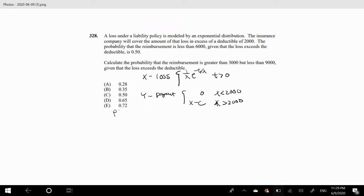They give you the probability the reimbursement is less than $6,000 given the loss is greater than our deductible equals 0.5. And they say what you want to find is the probability that the reimbursement is between $3,000 and $6,000 given that X is greater than our deductible. That's the question.